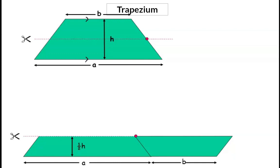Here, the base is now A plus B, and the height is now half of the original trapezium's height. The area of a parallelogram, we have the formula base times perpendicular height.